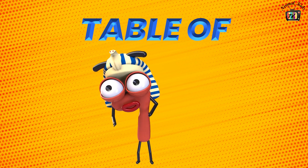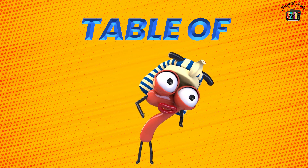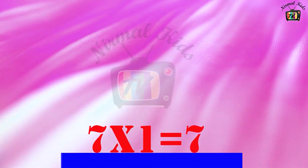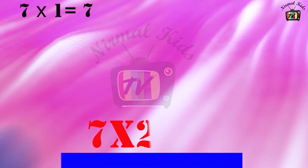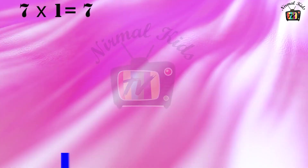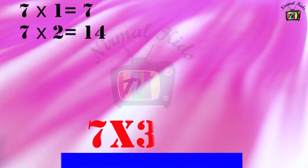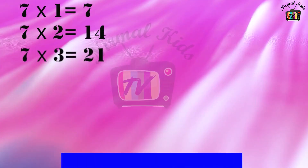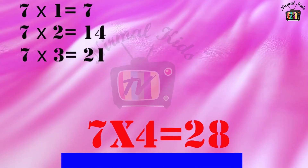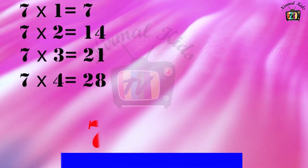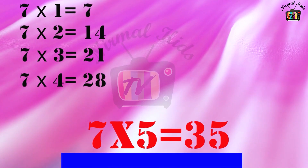Table of 7. 7 1's are 7. 7 2's are 14. 7 3's are 21. 7 4's are 28. 7 5's are 35.